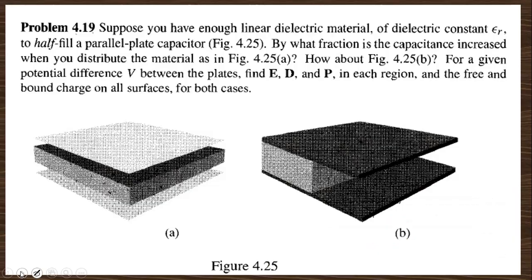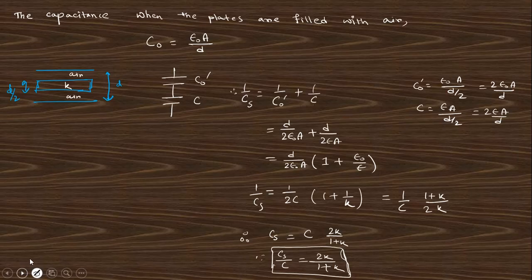The next question says: suppose you have a linear dielectric material of dielectric constant epsilon to half-fill the parallel plate capacitor. By what fraction is the capacitance increased if you distribute it one way versus the other? The first arrangement is like two capacitors in series combination, and the second is like a parallel combination.